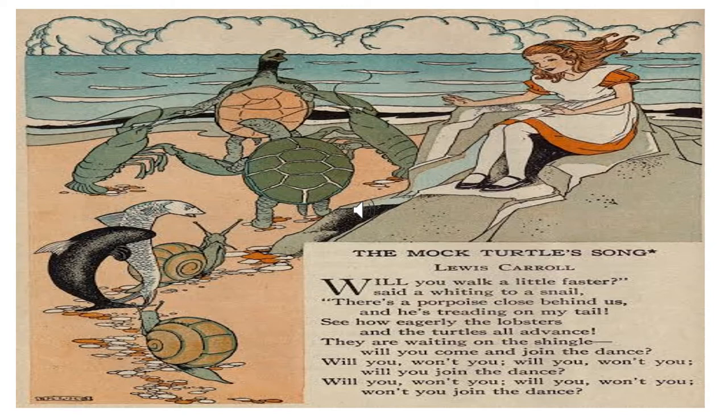Lobster Quadrille is a dance where all of the sea animals, except the jellyfish, partner up with the lobsters, advance from the seashore, and throw the lobsters out to sea. It is the name of a dance which they used to perform when they were younger and went to school under the sea. Each participant takes a lobster as a partner and later throws the lobsters out to sea as far as they can. Although they have no lobsters with which to perform the dance, the Gryphon and the Mock Turtle attempt to demonstrate it to Alice while the Mock Turtle sings the poem.